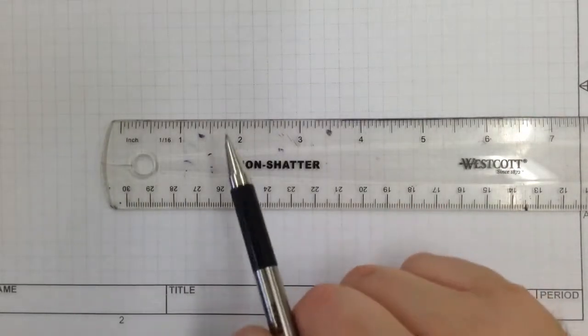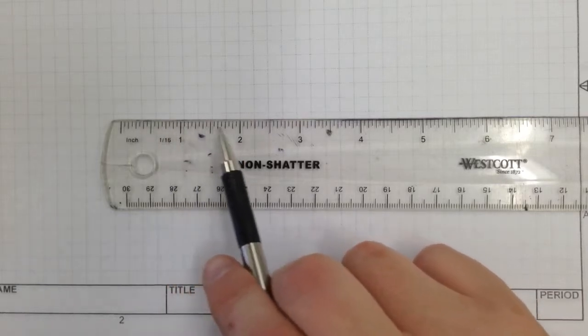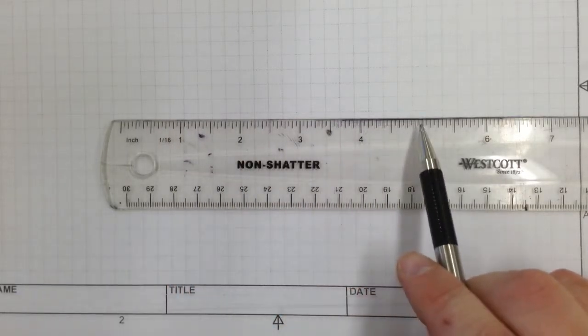We're going to take a few minutes today and talk about reading a fractional ruler. Up here, this is the fractional side of the ruler.